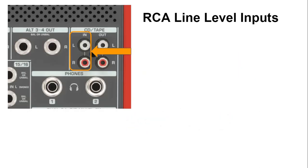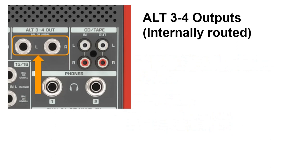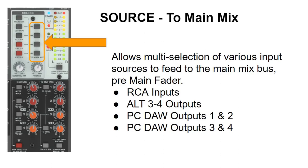We have CD/tape input, which are the RCA line level inputs. Then we have the alternate 3 and 4 outputs, which are internally routed to the same outputs as the alternate 3 and 4. Then we have audio return from your digital audio workstation — outputs 1 and 2, and 3 and 4 respectively. These audio sources feed directly into the main mix pre-fader.